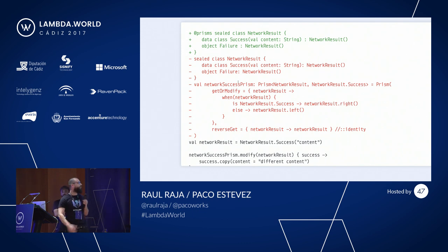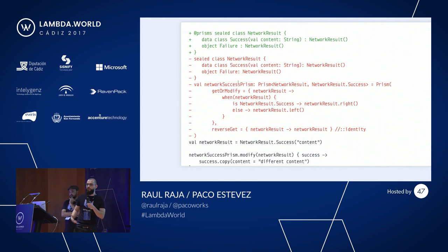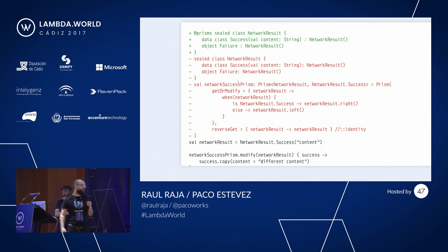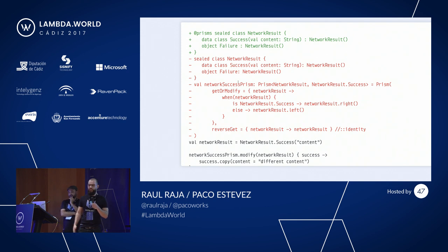Again, this was also a lot of boilerplate code. But with a prism annotation for a sealed class for a sum type, you can get all prisms generated for you — goodbye boilerplate code — and we can now compose all our optics together and work with immutable data in a very elegant way.